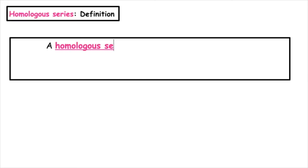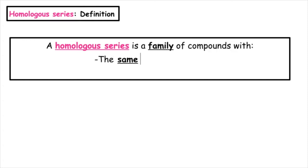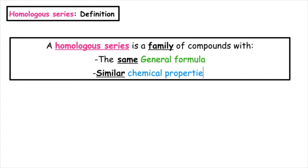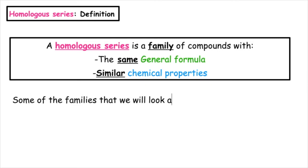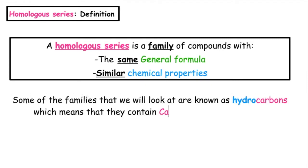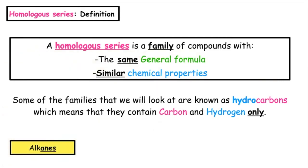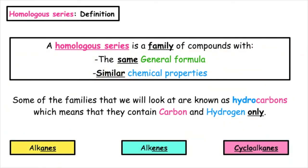A homologous series is a family of compounds with the same general formula and similar chemical properties. Some of the families that we will look at are known as hydrocarbons, which means that they only contain carbon and hydrogen. Some of the families we'll look at are alkanes, alkenes, and cycloalkanes.